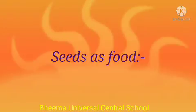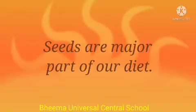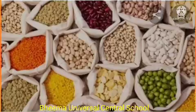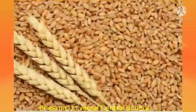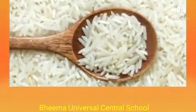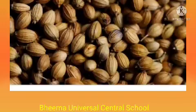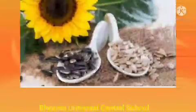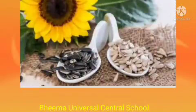Next one is seeds as food. Seeds are a major part of our diet. Tell me some names of pulses. Very good — moong dal, lentils, chickpeas, kidney beans. Tell me some names of cereals. Very good — wheat, jowar, bajra, rice. Cumin, coriander, black pepper and cardamom are few seeds used as spices. Seeds of mustard, groundnut and sunflower are used for making oil, and hence these seeds are called oil seeds.